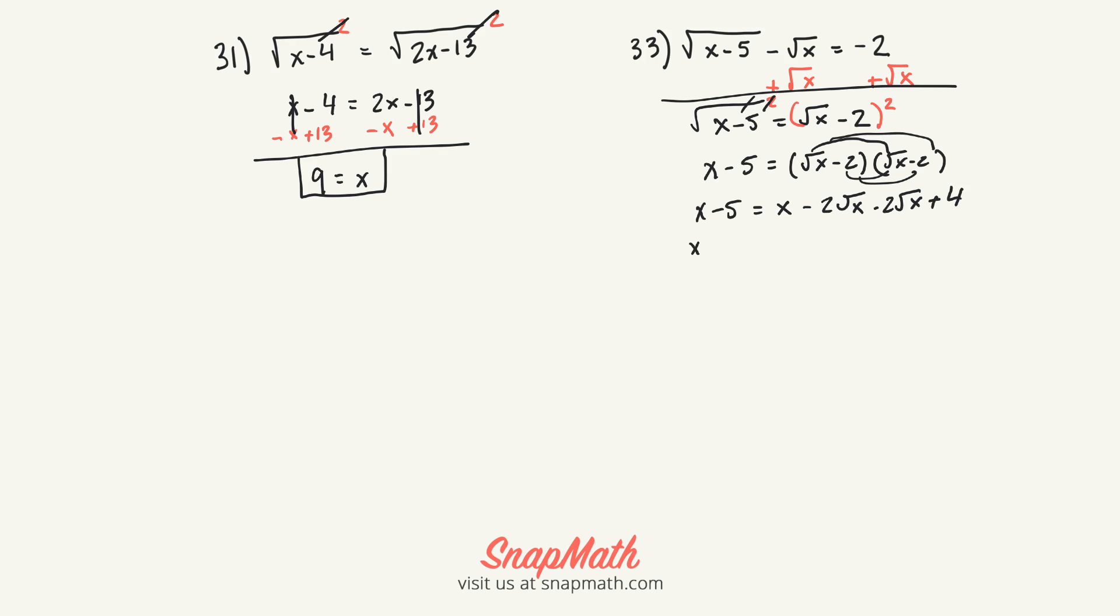Then we combine like terms, so x minus 4 rad x plus 4. Now what we're going to do is bring these two pieces over to the other side. I'm going to subtract x and subtract 4 on each side. Then these cancel out. These happen to cancel out, so I got negative 9 equals negative 4 rad x.